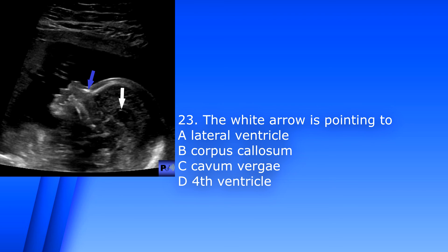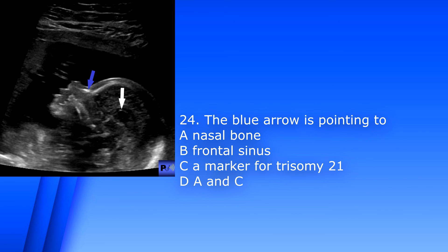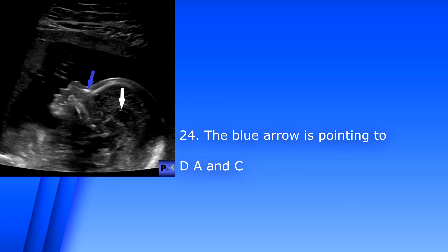Number 23. The white arrow is pointing to: A. Lateral ventricle. B. Corpus callosum. C. Cavum vergae. Or D. Fourth ventricle. The answer is B. Corpus callosum. Number 24. The blue arrow is pointing to: A. Nasal bone. B. Frontal sinus. C. A marker for trisomy 21. Or D. A and C. The answer is D. A and C — it is a nasal bone, and it's also used as a marker for trisomy 21.